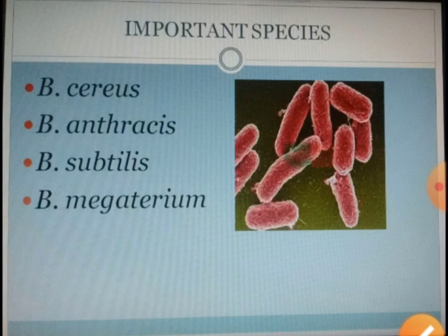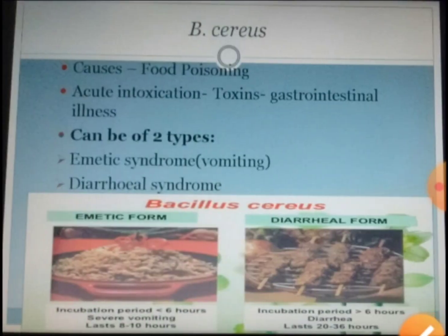There are several species under Bacillus, but the most important ones are Bacillus cereus, Bacillus anthracis, Bacillus subtilis, and Bacillus megaterium. The focus is on Bacillus cereus because this is the organism which causes food poisoning. The others are not much involved in food poisoning, but Bacillus cereus is the one which is involved.